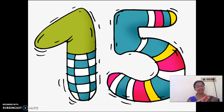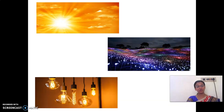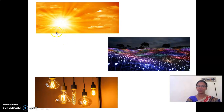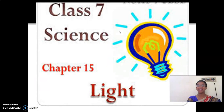So this lesson will also be interesting for you. Look at here — I have given you some clues to find what is the title of that lesson. These are all the clues for you. What is this? Sunlight. Here, color lights. Light. So whether you want to guess the answer? Very good. So the lesson is light. Chapter 15 is light.